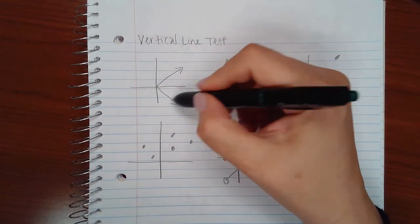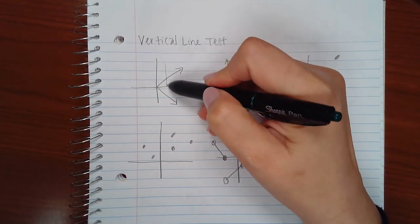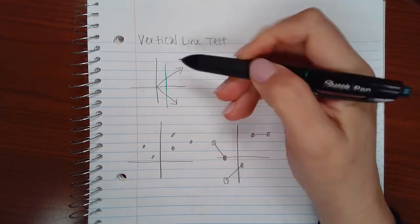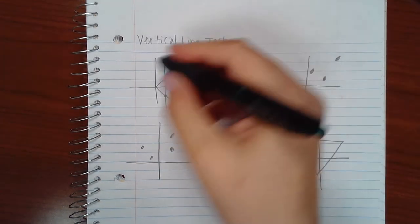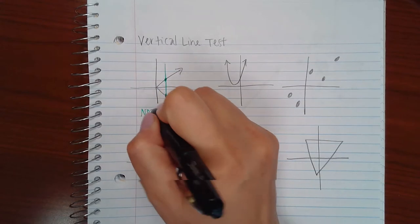So this graph right here, if I were to draw a single vertical line right there, you would notice that it would hit it here and here, which makes this graph not a function.